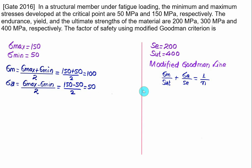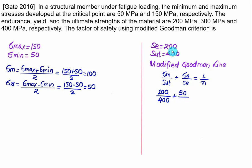Substituting the values: mean stress 100 divided by SUT 400, plus amplitude stress 50 divided by endurance 200, equals 1 upon N. Solving, the factor of safety N comes out to be close to 2.